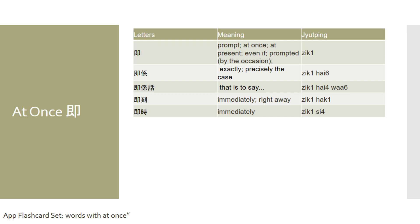The first character I want to talk about is 'At Once,' in which the Cantonese character is pronounced 直, 直, 直. The meaning behind this character is: prompt, at once, at present, even if, or being prompted by the occasion.